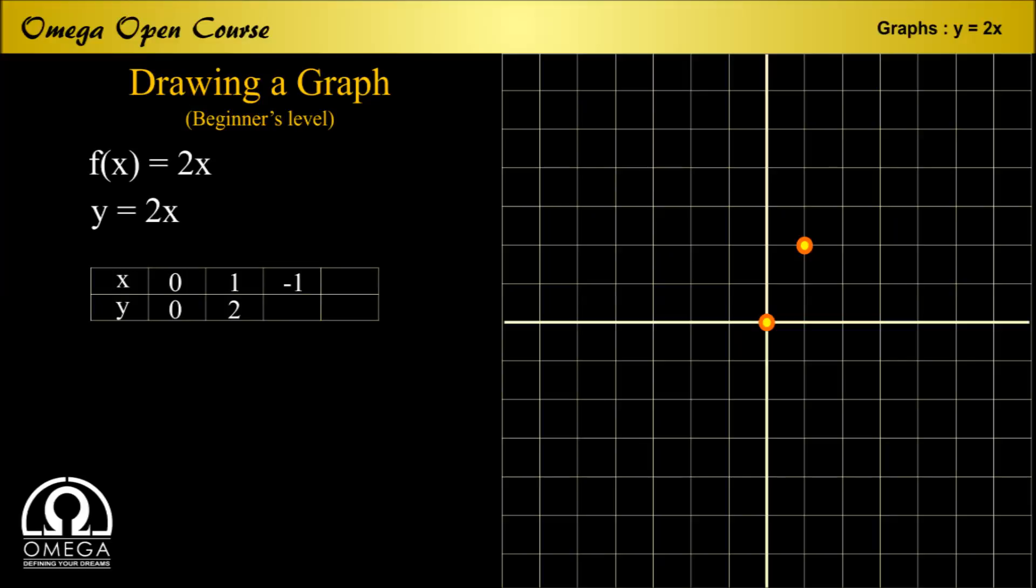Similarly, if we put x is equal to -1, we get y is equal to -2 and we plot (-1,-2). And if x is equal to 2, y is equal to 4, therefore yet another point is (2,4).